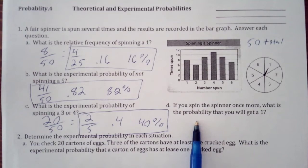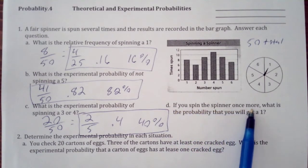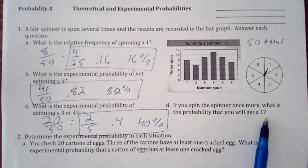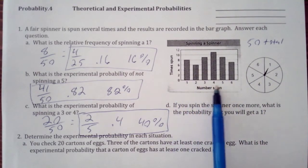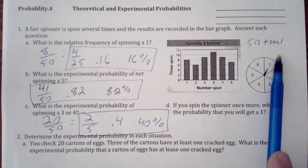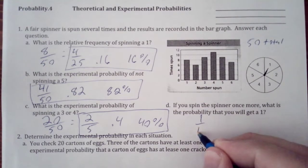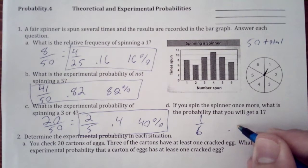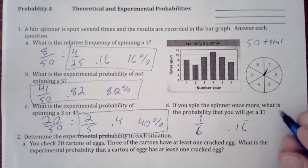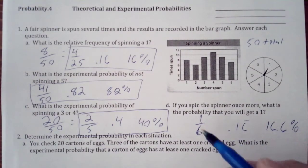And D, our last one: if you spin the spinner once more, what is the probability you would get a 1? Well, we don't even look at the experimental data, we look at our spinner here. So if we spin it one more time, we're going to have 1 sixth, or 0.16 repeating, or 16.6%.